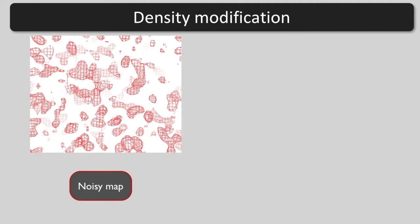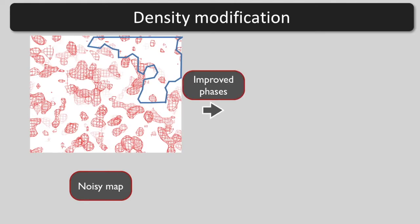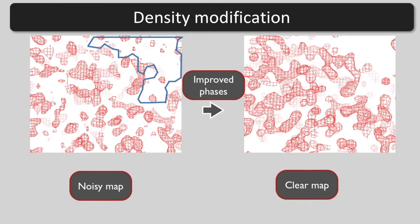Here is our strategy. Identify places in the noisy map where we know how to improve the density. We might be pretty sure that the density in the upper right is flat. Now we can ask a question like, what phases that are consistent with our experimental measurements would lead to flat density in the upper right? Those phases can lead to a map that is better everywhere.